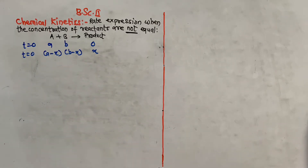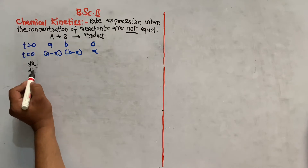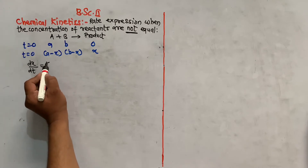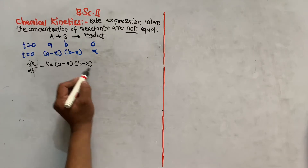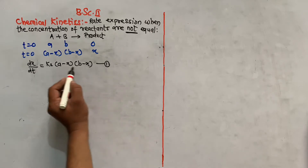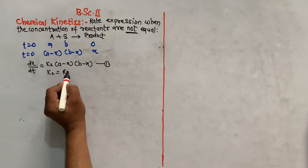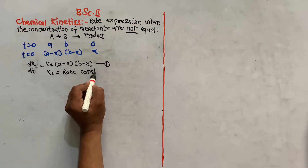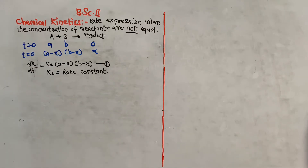As this is a second order reaction, the rate expression can be given as dx/dt = K₂(a - x)(b - x), which we call equation number 1, where K₂ is the rate constant for a second order reaction.